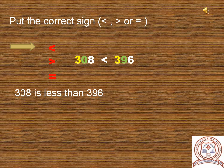Next: compare 308 and 396. Start by comparing the leftmost digit. The digits at hundreds place are same. So we move to the next place value, which is tens. In 308, 0 is at tens place, and in 396, 9 is at tens place. 0 is smaller than 9 tens. Hence 308 is smaller than 396.